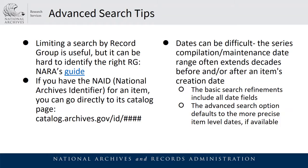Advanced search tips: limiting your search by record group is useful but it can be hard to identify the right record groups. NARA does have a guide by subject available to help you identify relevant record groups. Most research topics will be spread over multiple record groups, and in these record groups they might have duplicate materials, related materials split over several different record groups, or out-of-scope materials as collected by agencies. I generally don't recommend starting your search narrowed by record group because you'll likely be missing many relevant results.